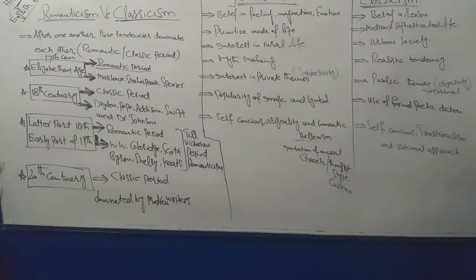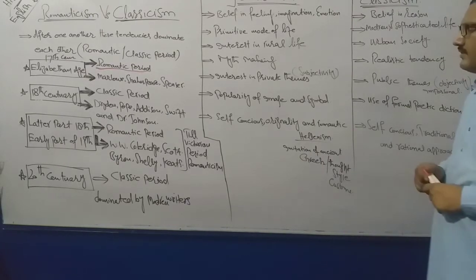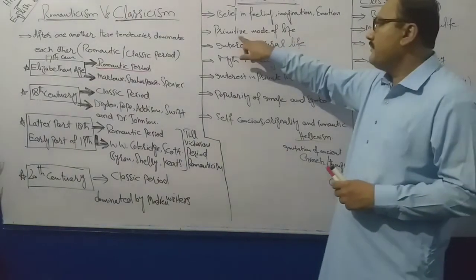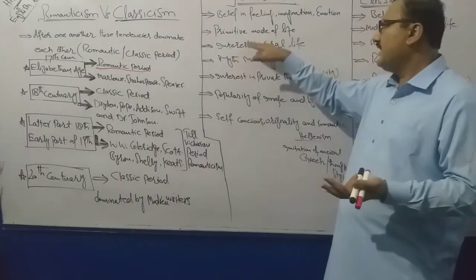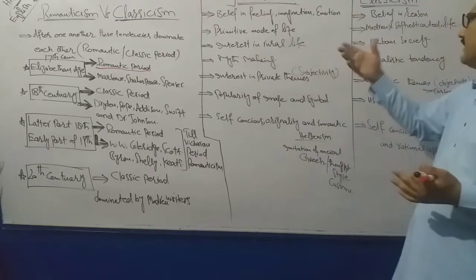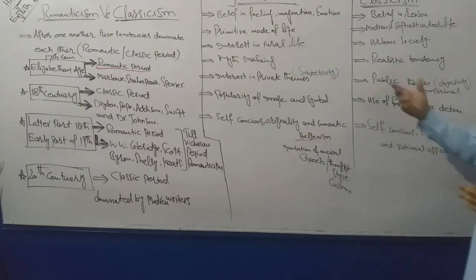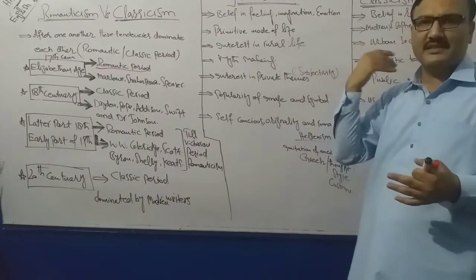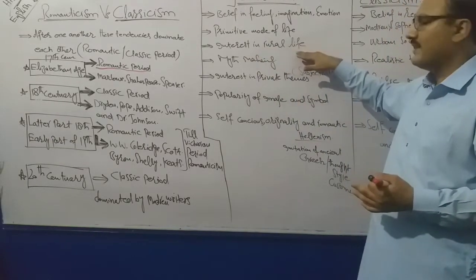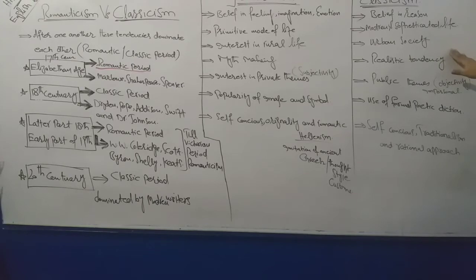Classicism is the belief in reason. Romanticism is the belief in primitive mode of life. Classicism is the belief in modern and sophisticated mode of life. Romanticism is the belief in rural life, spiritual life. Classicism is the belief in material life.